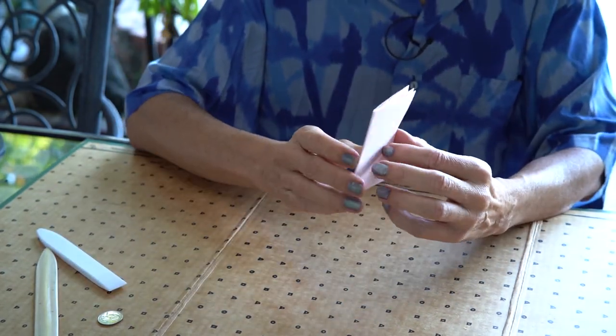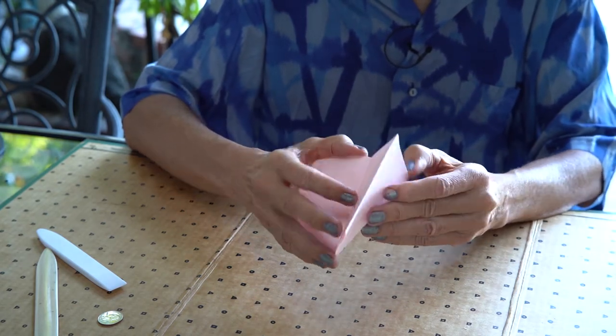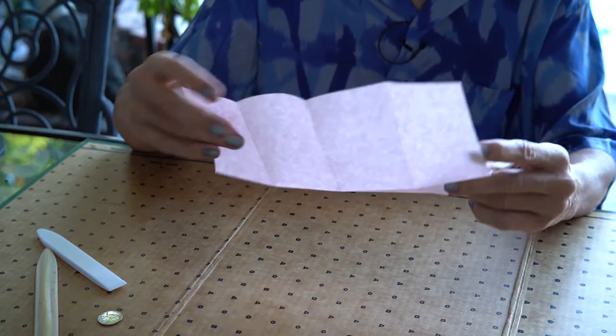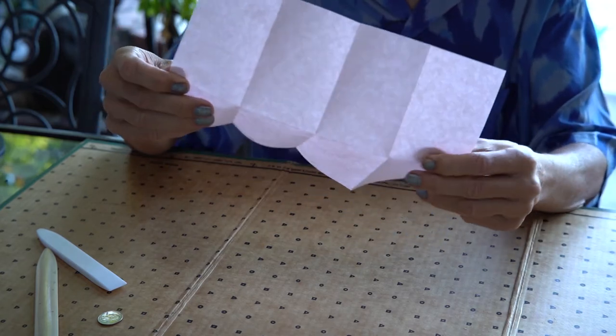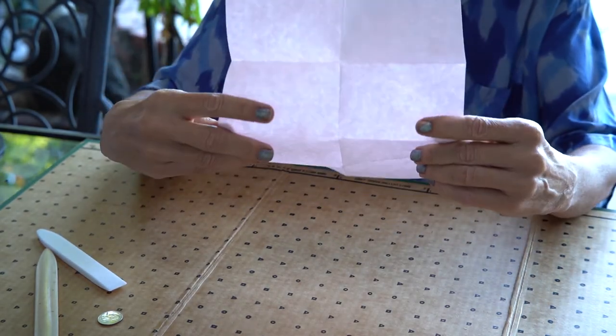Now I'll open the whole thing up. I've got a piece of paper with some folds. And now I'm going to take this sheet and fold it, not the hot dog way again, but the hamburger way.